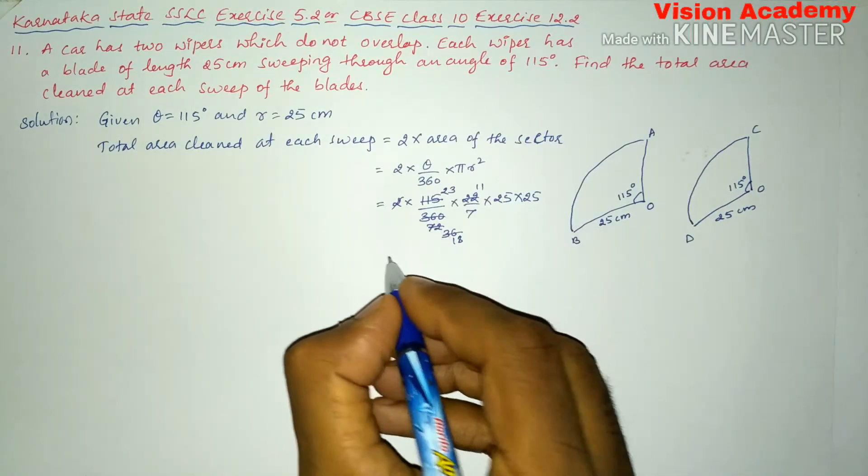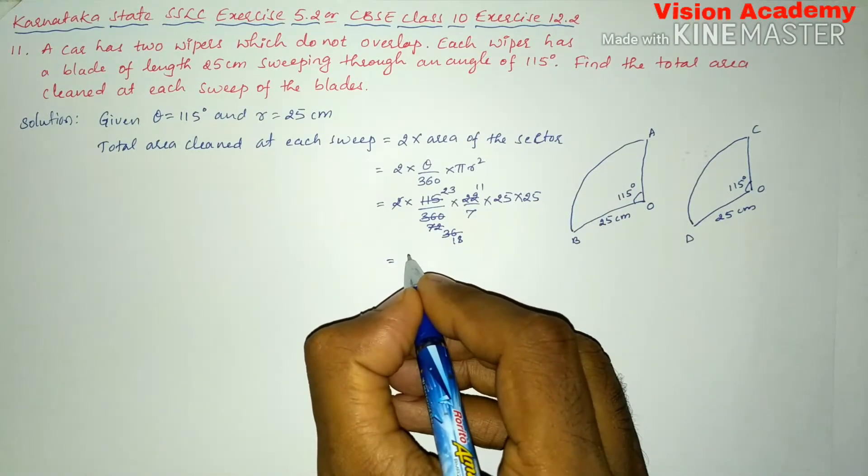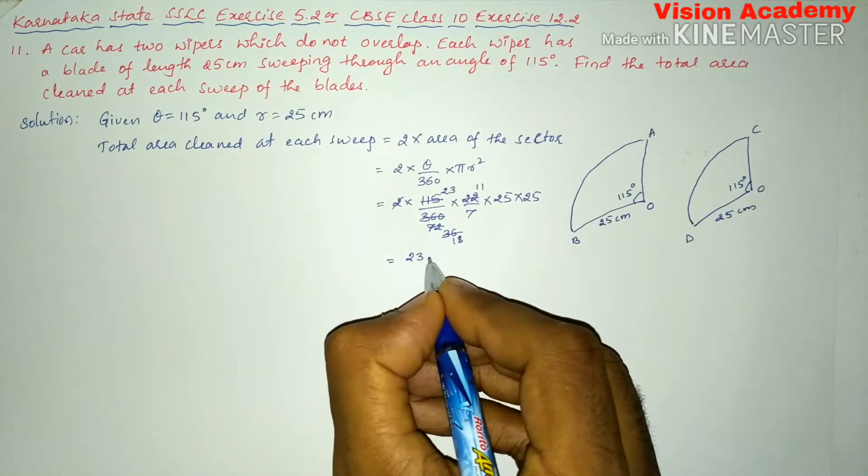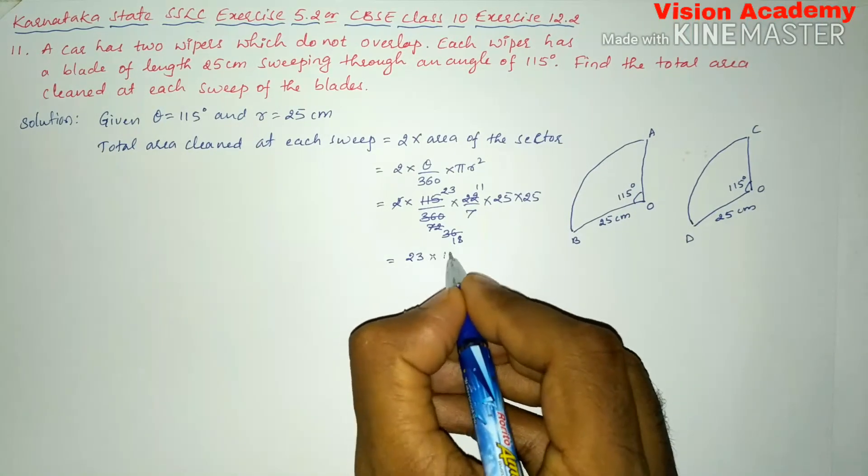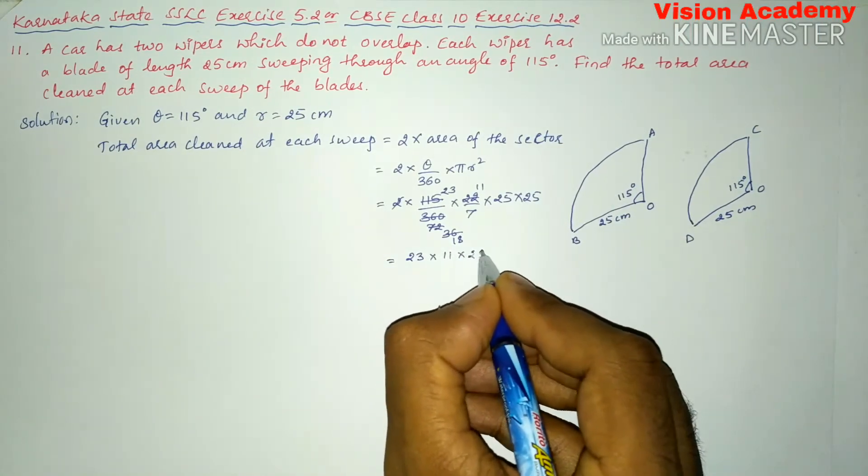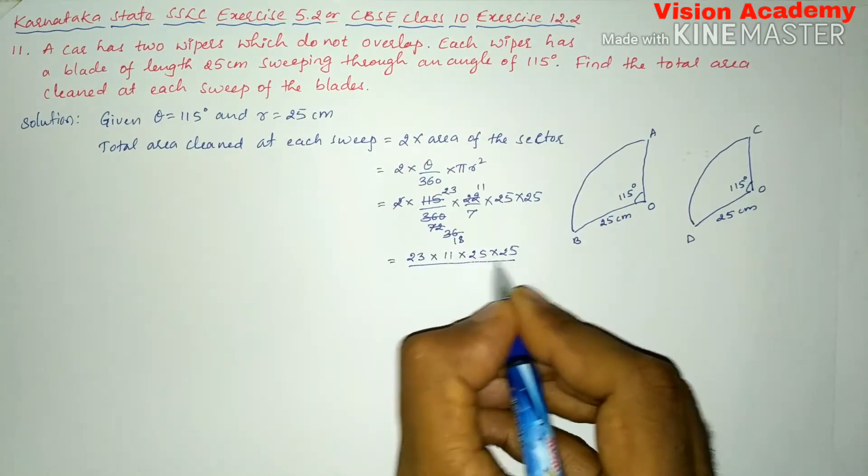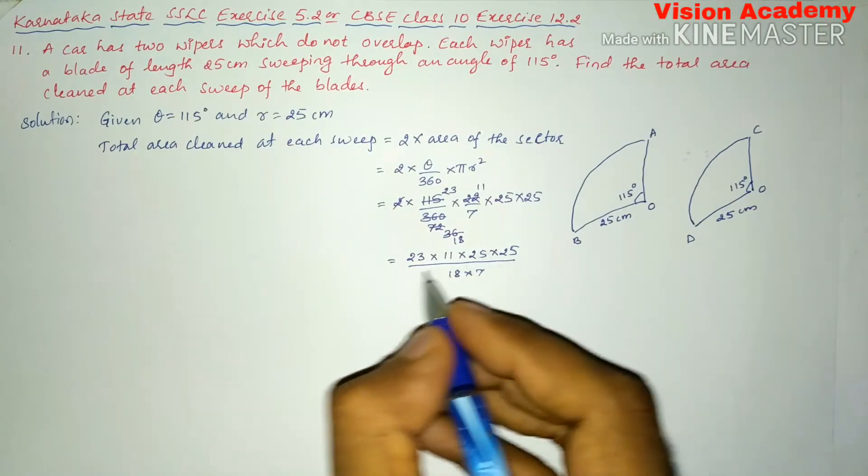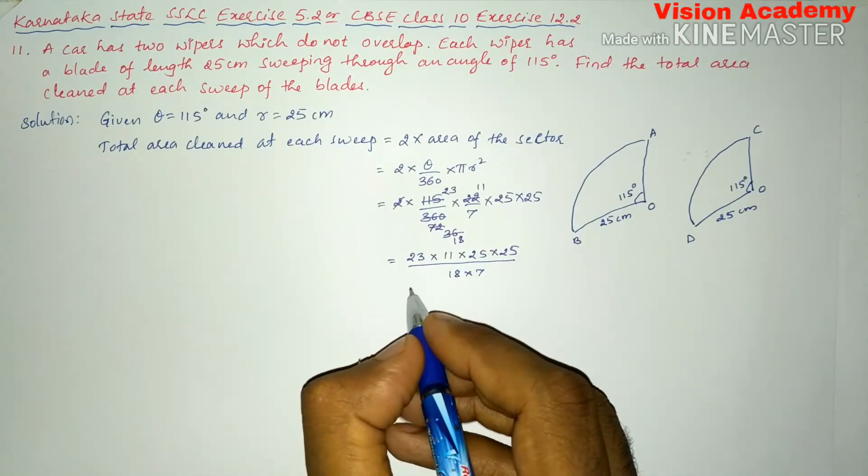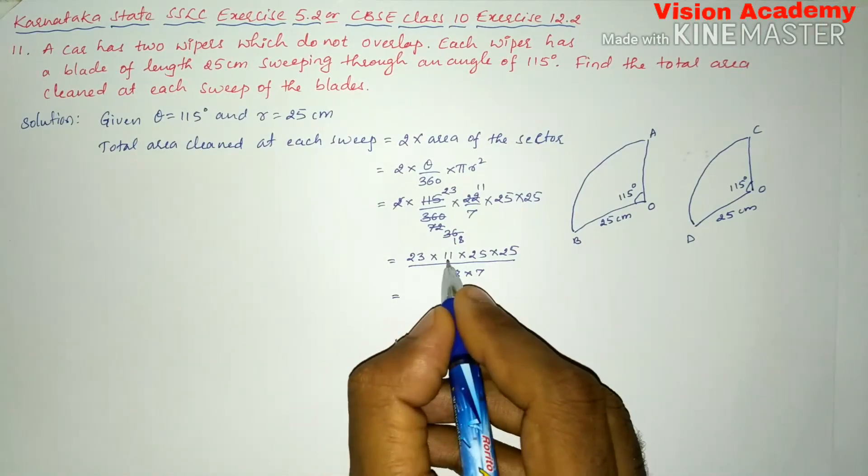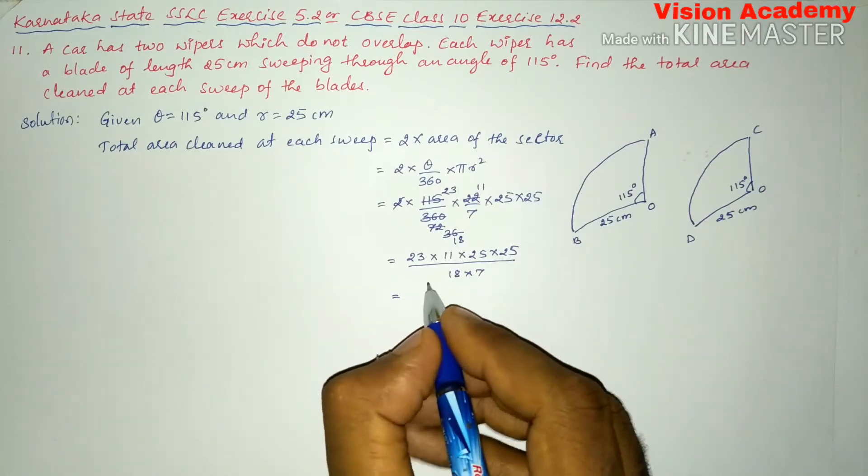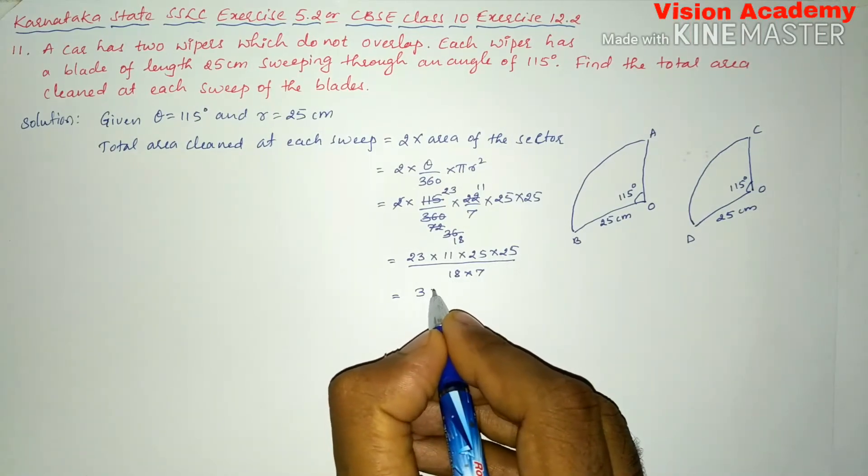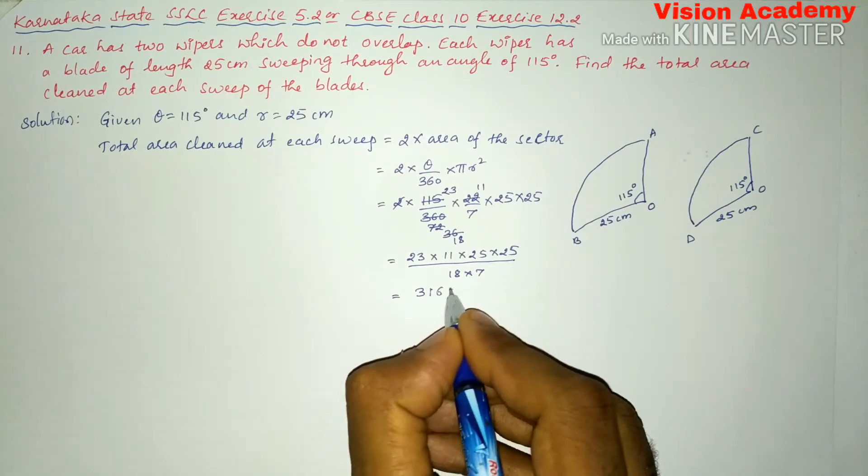So after simplification, we will get 23 × 11 × 25 × 25 whole divided by 18 × 7. Here we will get 23 × 11 × 25 × 25 gives us 158125 divided by 126.